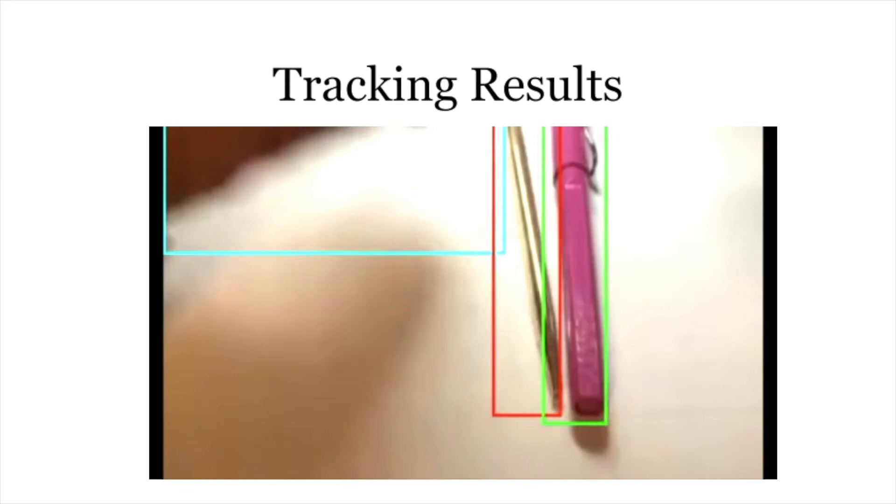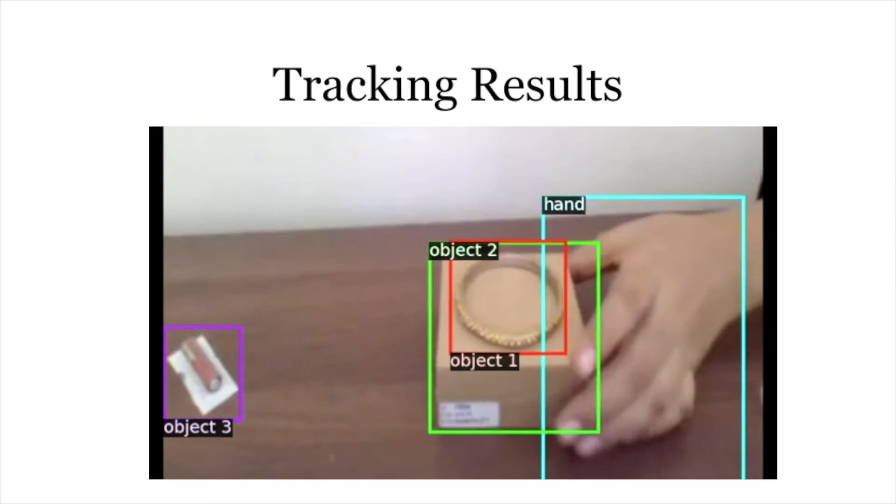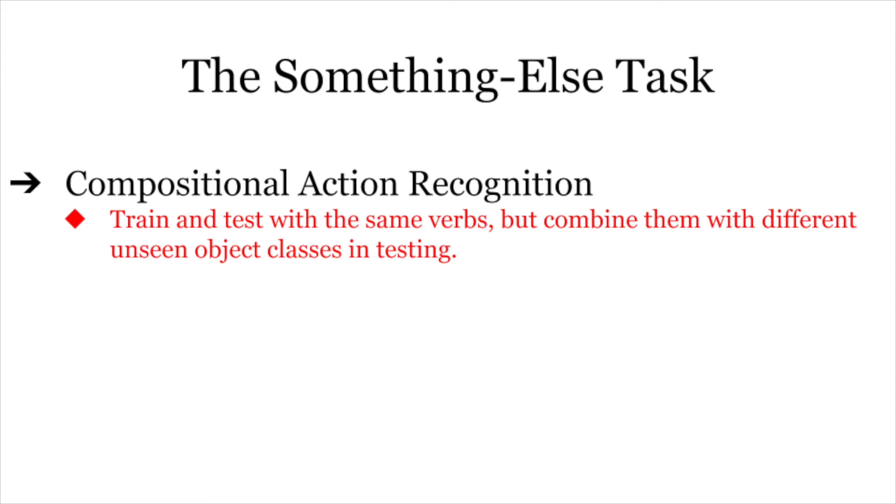We further propose two novel tasks: compositional action recognition where models are required to recognize an action when performed with unseen objects—objects which do not appear together with this action at training time.